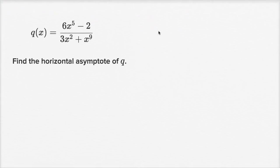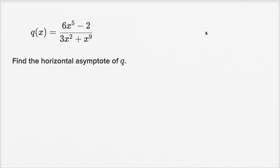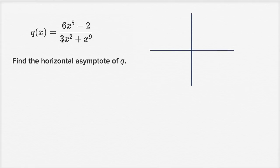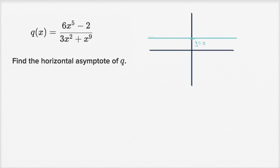Now they're asking us to find the horizontal asymptote of q. A horizontal asymptote is what the function approaches as x approaches positive or negative infinity. For example, imagine a function with a horizontal asymptote at y equals 2 — the graph approaches that line as x gets really large or really negative, without ever quite reaching it.